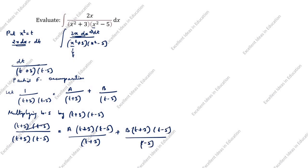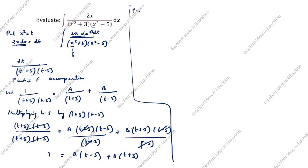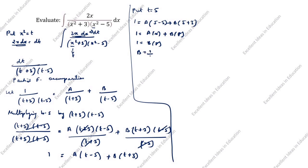After cancellation, we get: 1 = A(t - 5) + B(t + 3). Now put t = 5: 1 = A(5 - 5) + B(5 + 3), so 1 = A(0) + B(8), giving 1 = 8b, therefore b = 1/8.